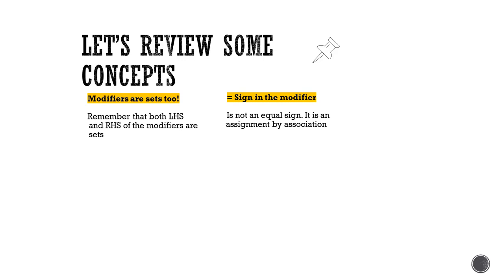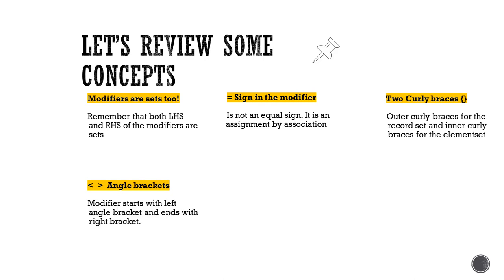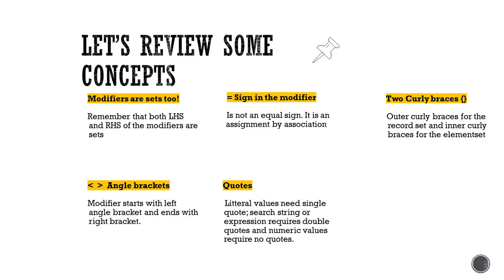Okay, so let's review some concepts. One of the important concepts to understand is the modifier itself has sets on both sides of the equal sign. So we notice that the modifier starts with angle bracket and ends with angle bracket, and within that we have a field name equal element set. What lies on the left and right side of the equal sign are two sets. An equal is not in a literal sense—it's really an association of possible values between two sets. There are always two curly braces: the outer curly braces are for the record sets, and the inner curly braces are for the element sets within the modifier. The angle bracket indicates start and end of modifier. Literal values need single quote, search string requires double quote, and numeric values require no quotes at all. And there is a so-called mixed state—that means record set can be in a default state while element set can be in another set if you use an alternate state.